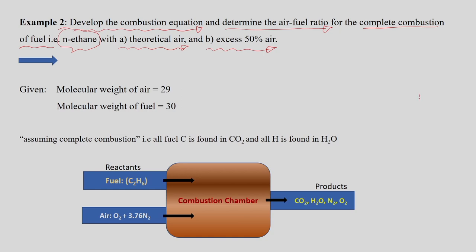So there are two sub-cases: one considering theoretical air required for combustion, and another considering 50 percent excess of the theoretical air — that means 150 percent of the theoretical air — which is called excess air. For the theoretical air case, the molecular weight of air is 29 and the fuel (ethane) molecular weight is 30.